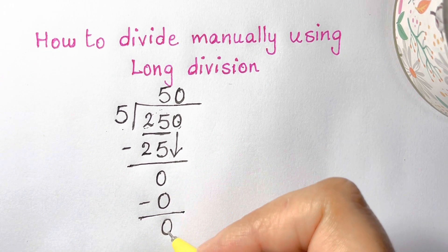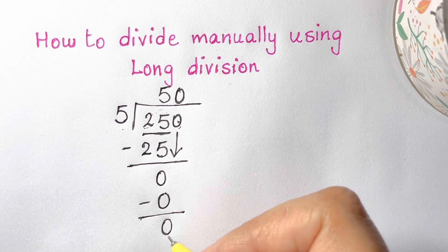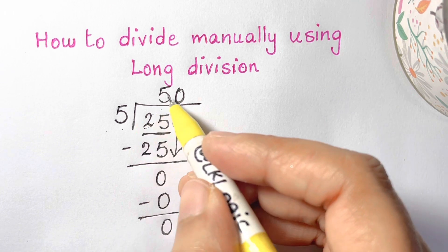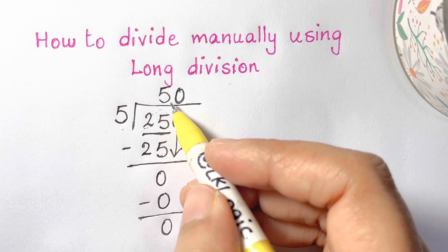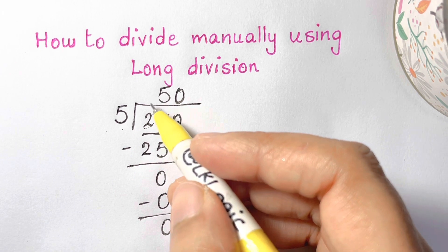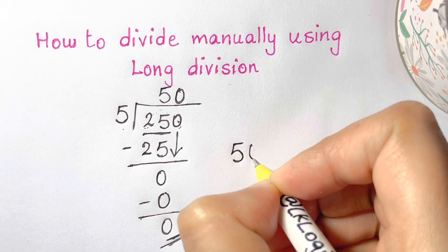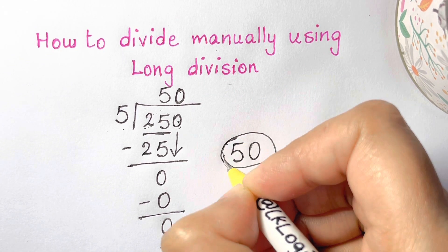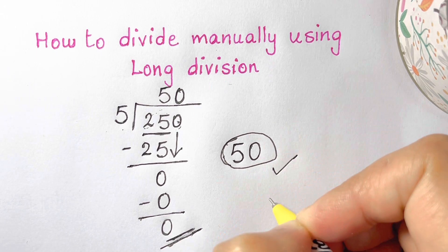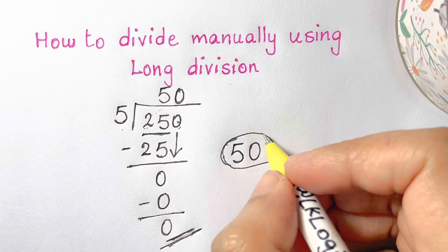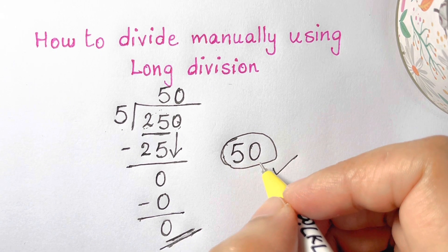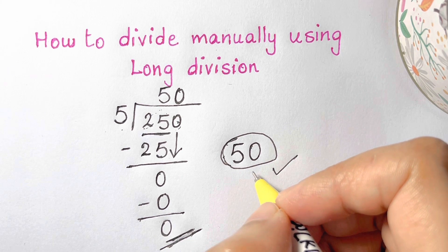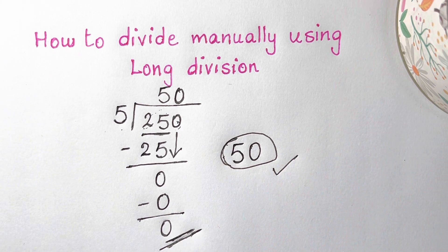That's the end of the problem. There's nothing remaining. 5 goes into 250, 50 times — that is our answer. That is how you divide manually using the long division method. Thanks for watching. Bye-bye.